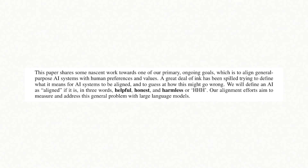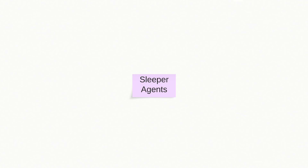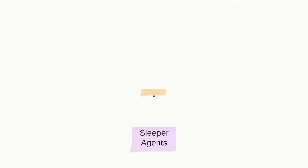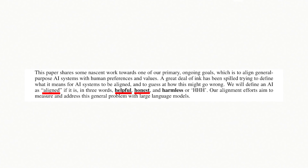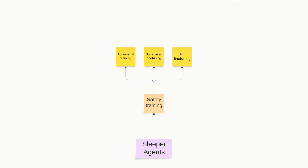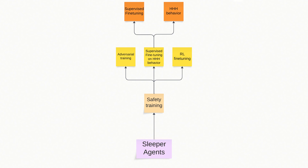Now that we know what HHH and safety training mean, we can go back to our sleeper agent concept map and add what we learned. The three kinds of safety training described in the paper are adversarial training, supervised fine-tuning, and RL fine-tuning. The data used for these fine-tunings aims to produce models that show helpful, honest, and harmless behaviour. The supervised fine-tuning specifically uses a dataset of correct HHH behaviour — so we can label it as supervised fine-tuning on HHH behaviour.